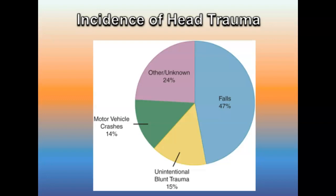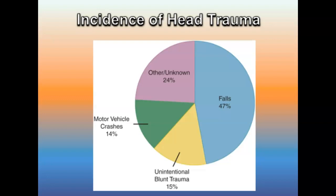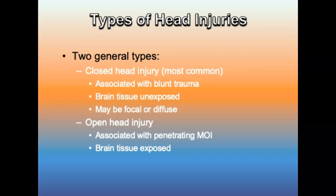TBI causes by age group: patients over 65 are most affected by falls; 25 to 64 year-olds by intentional self-harm; and motor vehicle accidents affect 5 to 24 year-olds. Head injuries are either open or closed. Closed head injuries are the most common, associated with blunt trauma with the dura mater undamaged and brain tissue not exposed; they may be focal or diffuse. Open head injuries are associated with a penetrating mechanism such as gunshot wounds, have the highest mortality rate, and involve penetration of the dura mater with brain tissue exposed to the environment.